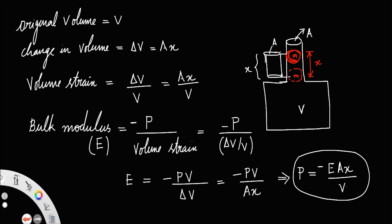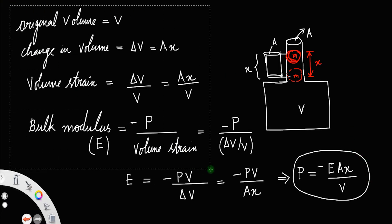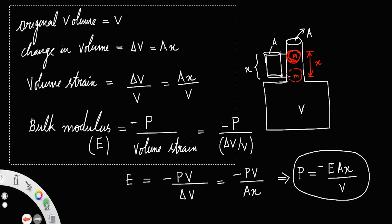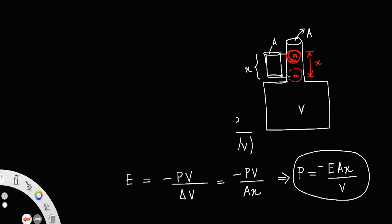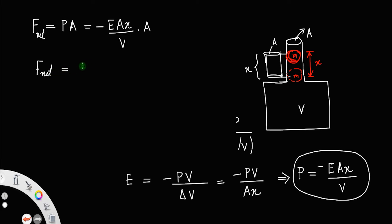Now, you know that the force acting at the neck — the net force F net — is equal to pressure times area. That is equal to minus E A x divided by V, times area A. So net force is equal to minus E A squared x divided by V. Let us call that equation number 2.